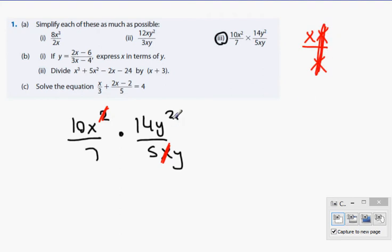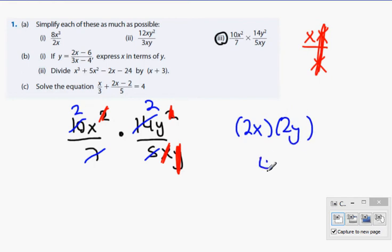Likewise, y squared divided by y, just get rid of the squared and the y. Next you're left with 14 divided by 7 equals 2, 10 divided by 5 equals 2. You're left with 2 multiplied by x, 2 multiplied by y, 2x by 2y, and that will get you 4xy. Happy enough with that? Would you like me to make up another one similar to it, to practice?